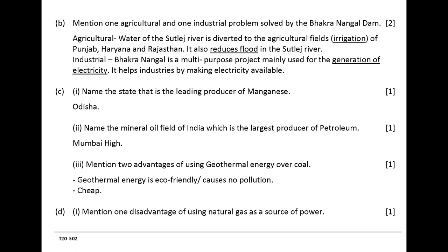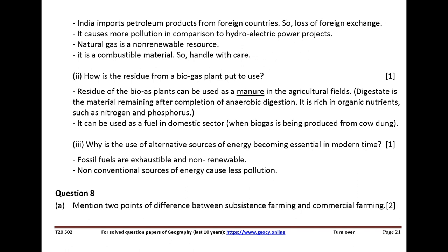Name the state that is the leading producer of manganese. Answer: Odisha. Name the mineral oil field of India which is the largest producer of petroleum. Answer: Mumbai High. Mention two advantages of using geothermal energy over coal. Geothermal energy is eco-friendly and causes no pollution. Mention one disadvantage of using natural gas as a source of power. India imports petroleum products from foreign countries, so there is loss of foreign exchange. It causes more pollution in comparison to hydroelectric power projects. Natural gas is a non-renewable resource.